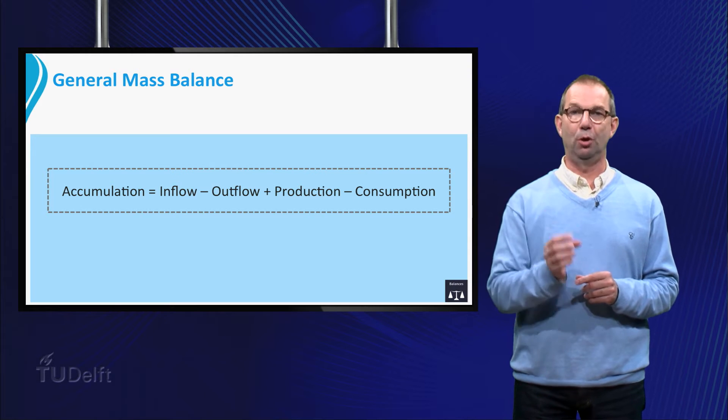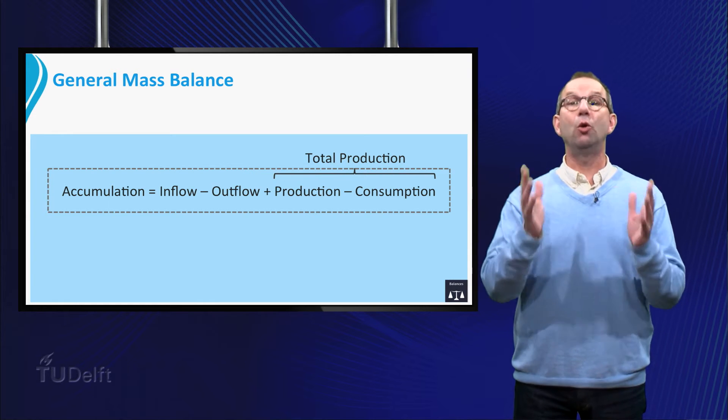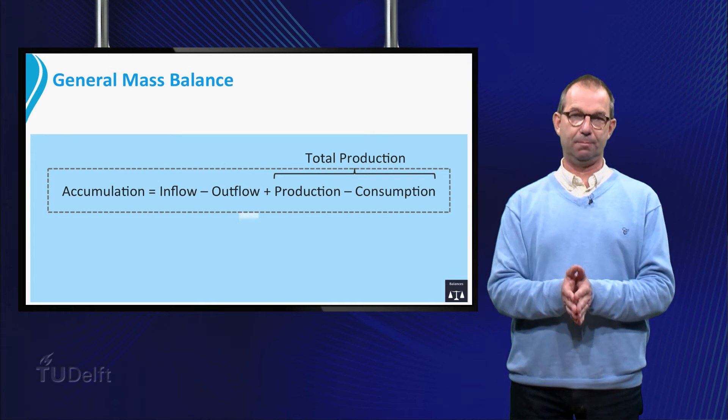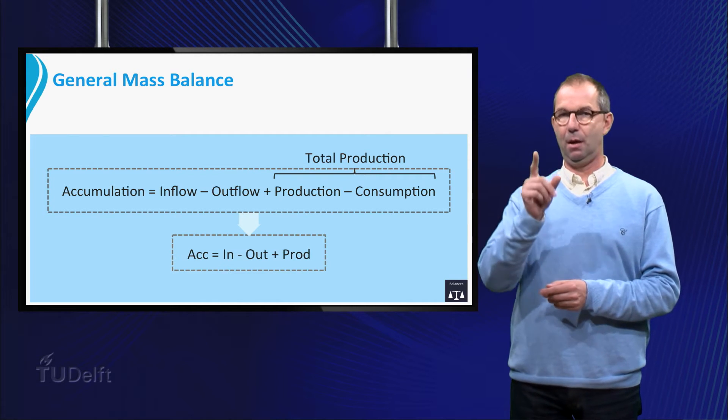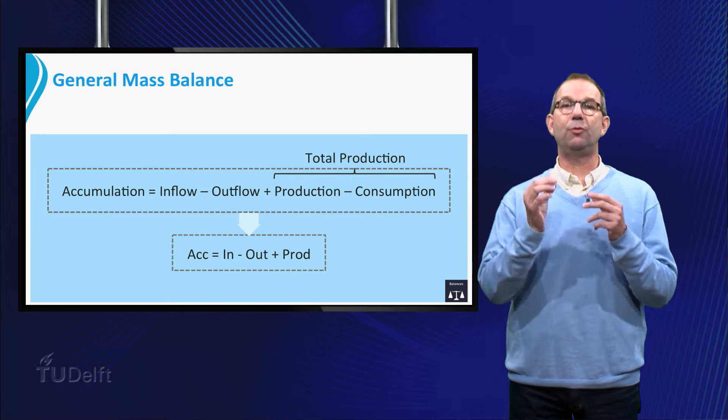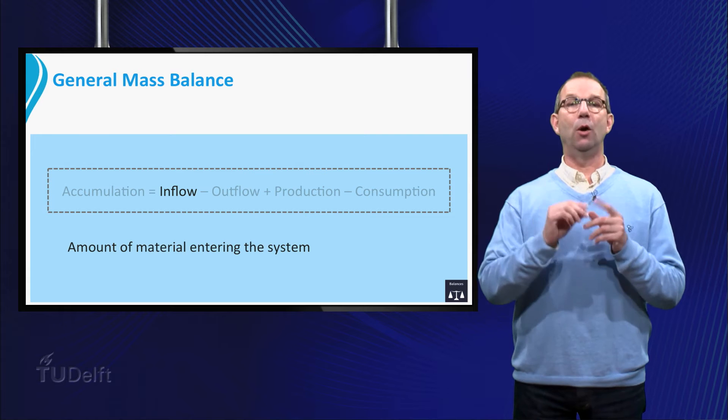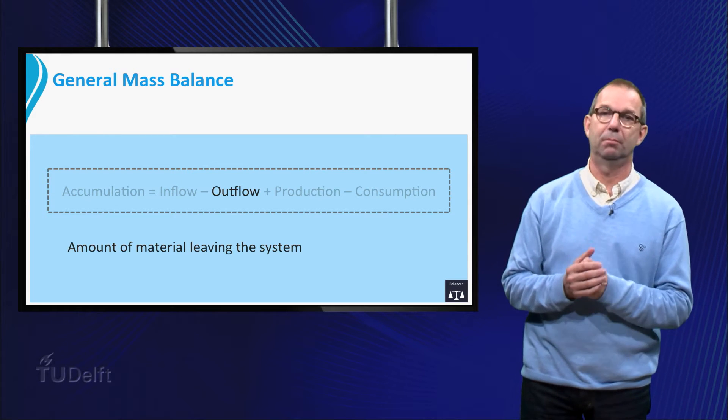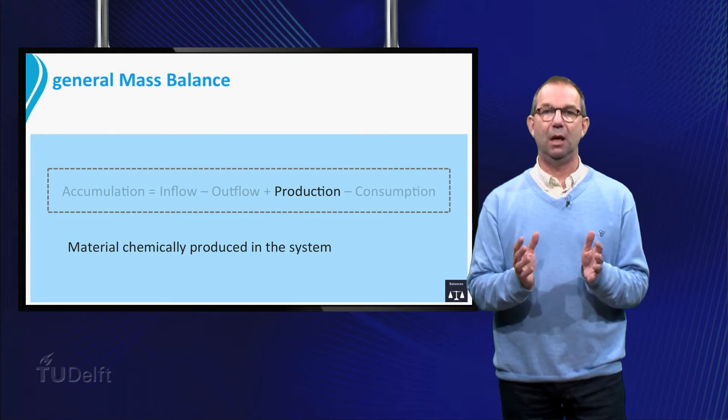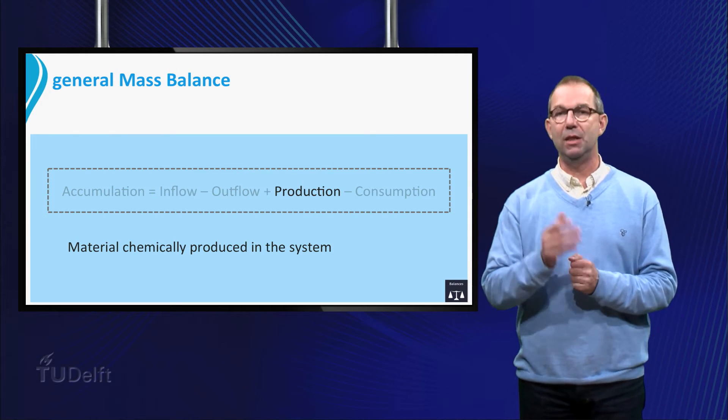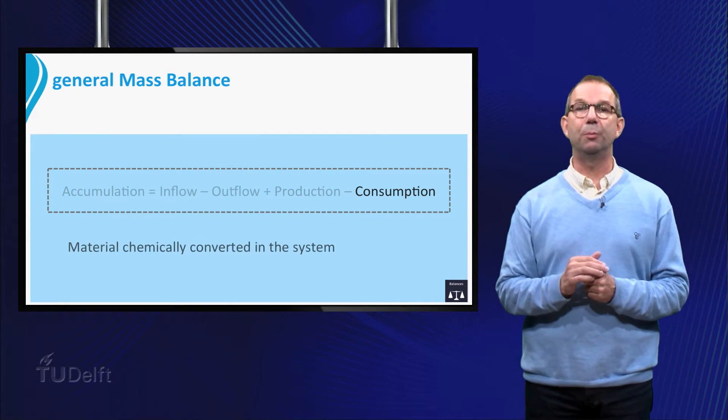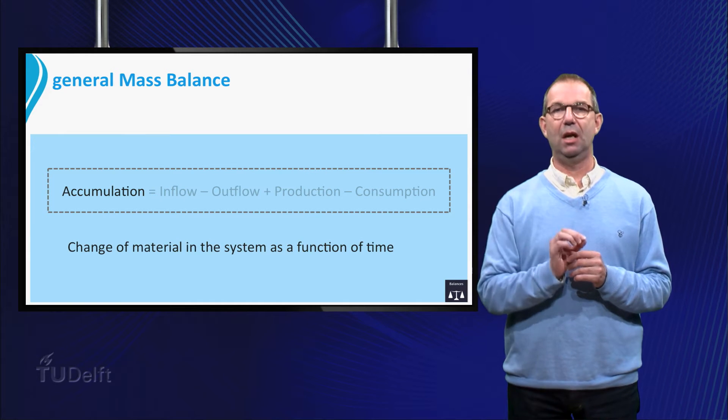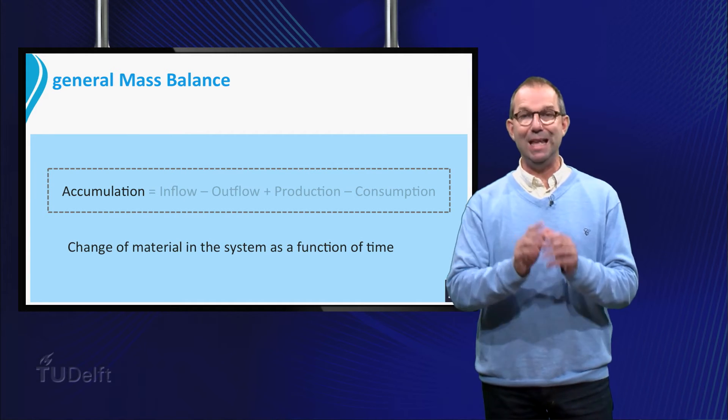Usually we combine the last two terms, production minus consumption, into a total production, which may thus be negative. It is convenient to even further shorten our notation and write Acc is in minus out plus production. Let's review the terms one by one. Inflow is the amount of material entering the system. Outflow is the amount of material leaving the system. Production is the amount of material that is chemically produced from another compound in the system. Consumption is the amount of material which is chemically converted into other compounds in the system. And finally, accumulation is the change in the amount of material in the system as a function of time.